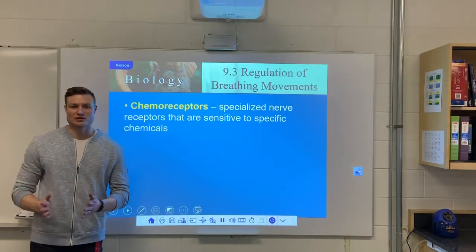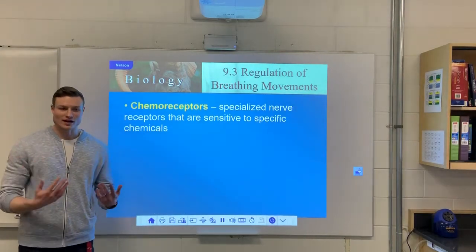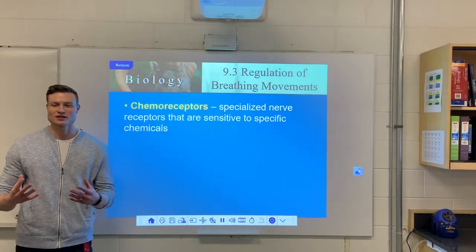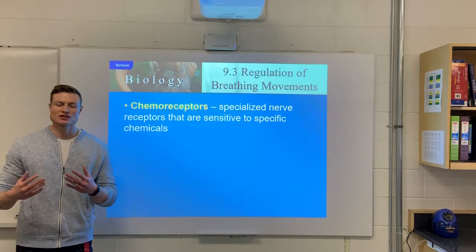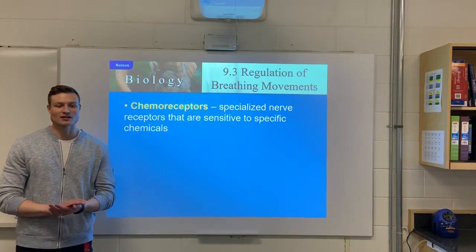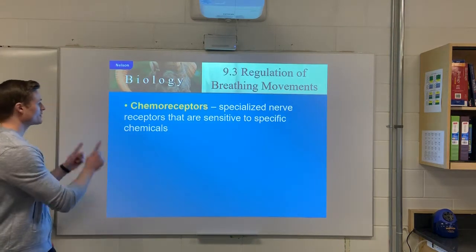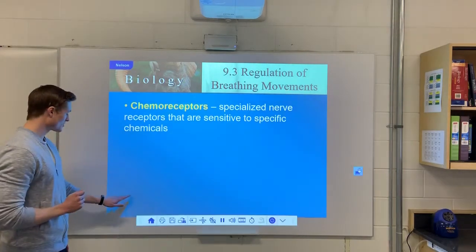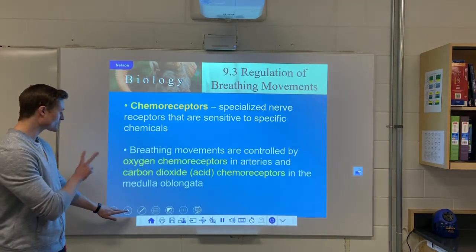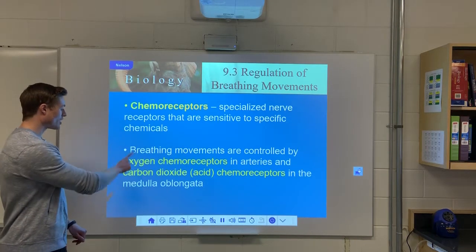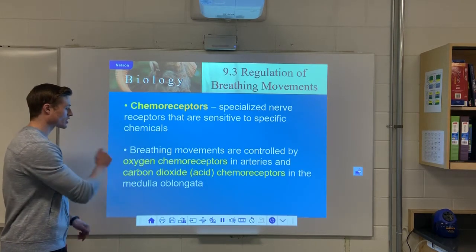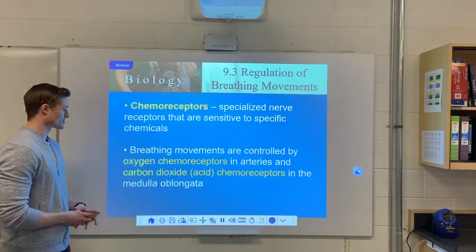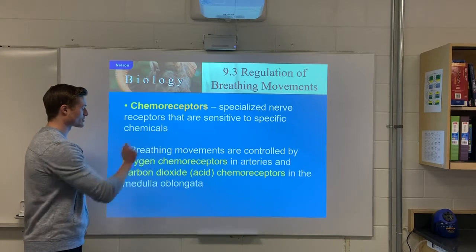Starting off, how do we actually breathe? We've talked about the structures and the gas exchange, but what actually goes on in the mechanisms behind the movement of breathing? We have these very special receptors in our body called chemoreceptors. We have two different kinds: oxygen chemoreceptors and carbon dioxide or carbonic acid chemoreceptors.